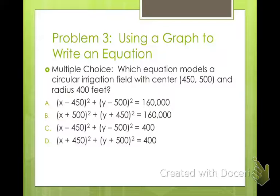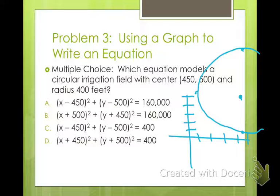Let's look at this problem. Suppose you are creating a circular irrigation field that has a center at (450, 500) and a radius of 400 feet. Which one of these equations models what you're trying to accomplish? Real quick, we're just going to do a sketch. I've said this a lot of times, but I will say it again: doing sketches for this chapter is going to be very beneficial to you. Don't be afraid to write some stuff down. Here we have a center at (450, 500). Our radius is 400 feet.